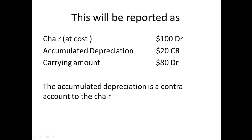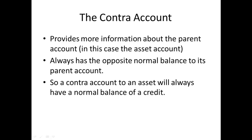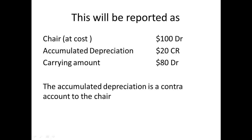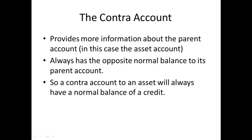The accumulated depreciation is a Contra account to the asset account of chair. Contra accounts provide more information about the parent account. By using the Contra account, we're able to tell that even though the carrying amount was only $80, we'd used up $20 already and the original cost was $100. The Contra account always has the opposite normal balance to its parent account. So the normal balance of an asset is a debit, and the normal balance of accumulated depreciation is a credit because it's a Contra account to the asset. Therefore, a Contra account to an asset will always have a normal balance of a credit.